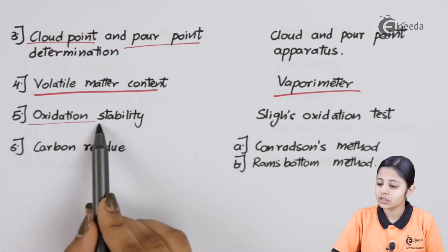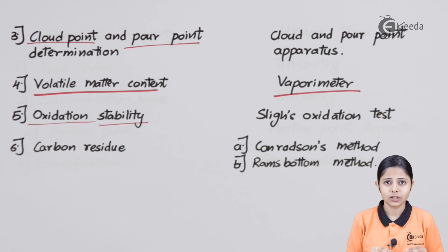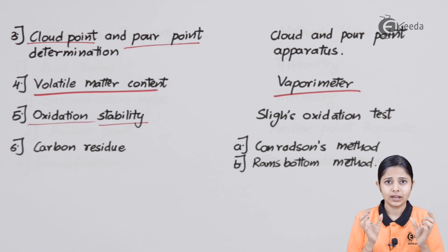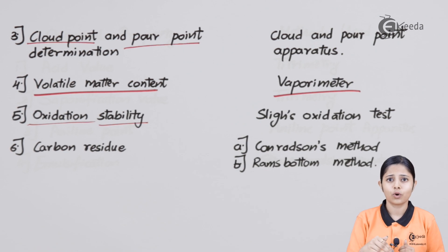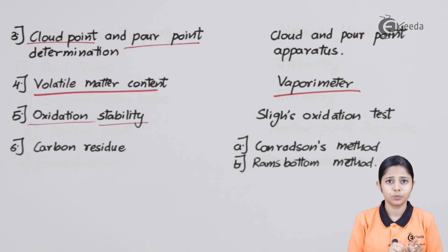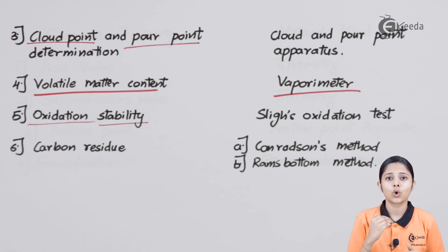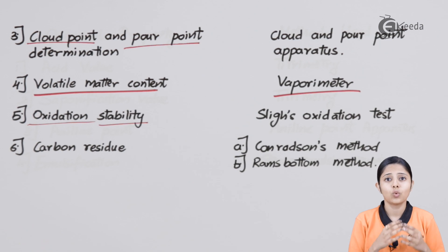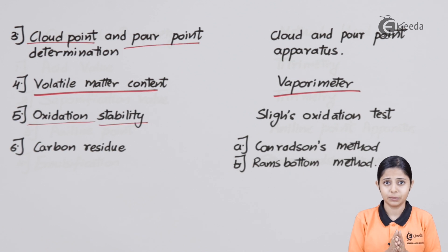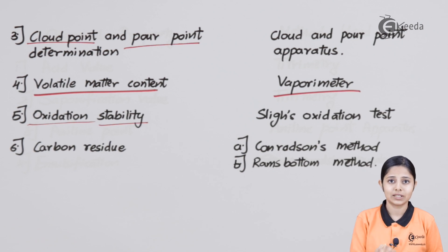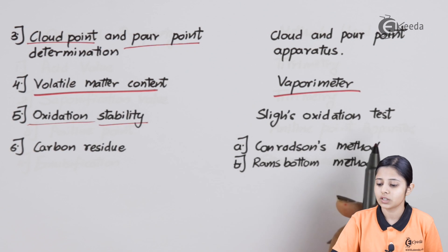Next we move on to oxidation stability. Oxidation is the reaction with or addition of oxygen. If I have a lubricant in its pure form but as soon as it is exposed to atmospheric oxygen it reacts and gives an oxidation reaction, it forms an oxide that is different from the original lubricant. I do not want that oxide between the two parts — I want the original lubricant there. That's why we always test for oxidation stability, which is done by the Sligh oxidation test.